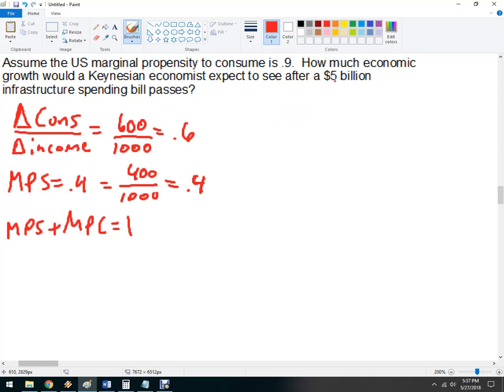Another way to think about this is the marginal propensity to save plus the marginal propensity to consume has to equal 1, because 1 represents that whole amount that you got in your raise. So, what we want to know is what is the fiscal spending multiplier?